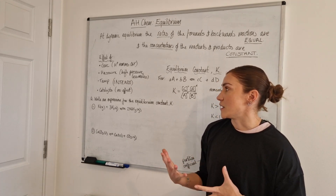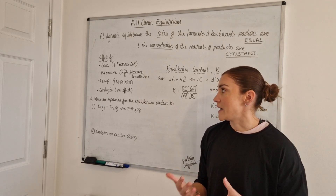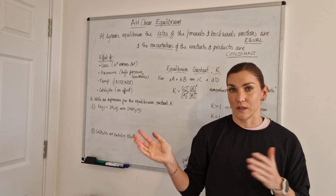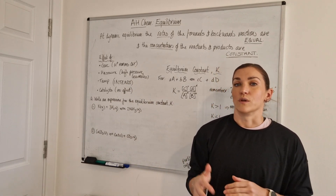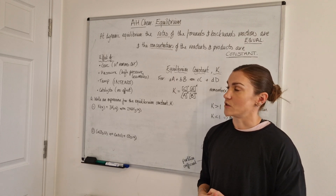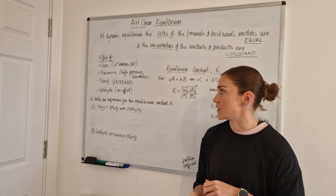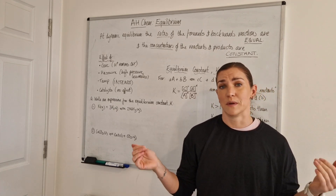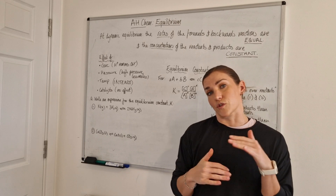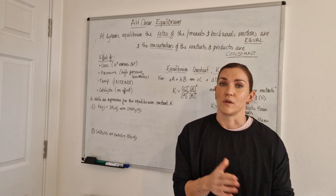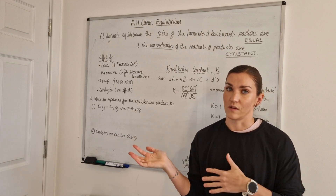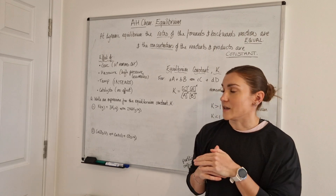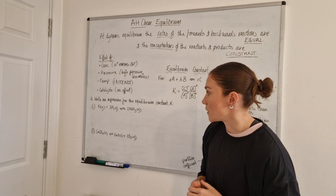For temperature, a useful mnemonic is 'intendo': an increase in temperature favours the endothermic reaction. That helps you work out which way the equilibrium shifts with a temperature change. Catalysts don't have an effect on the position of equilibrium because they speed up both the forward and backward reactions by the same amount, so the equilibrium position doesn't shift. You just reach equilibrium quicker because the reactions are going faster.